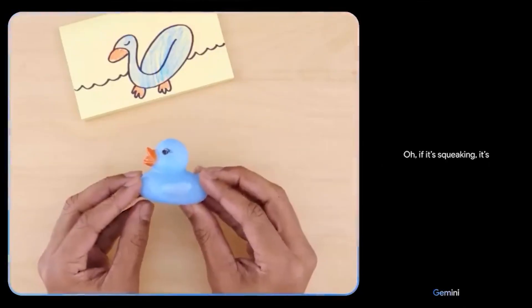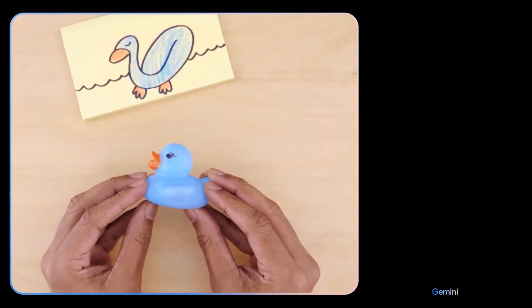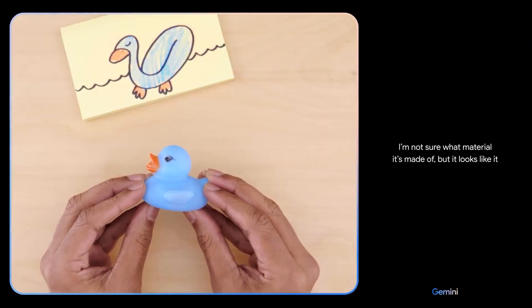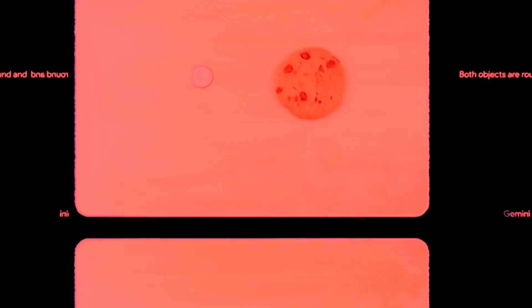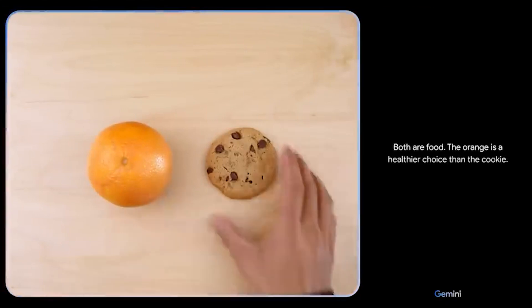Gemini also identifies a rubber duck, guessing it's made of plastic and might float. Would this float? I'm not sure what material it's made of, but it looks like it might be rubber or plastic. Think about how this could be used to sort materials for recycling, making the process smarter.